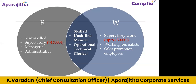On the right side under W, supervisory persons doing supervisory work and drawing more than 15,000 are included, along with working journalists as per the Working Journalists Act and sales promotion employees as per the Sales Promotion Employees Act. Supervisory persons drawing less than 15,000, working journalists, and sales promotion employees are all considered as workers.